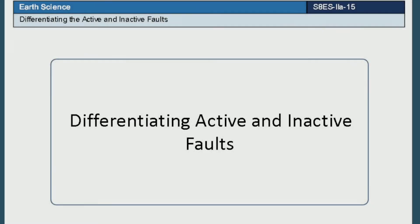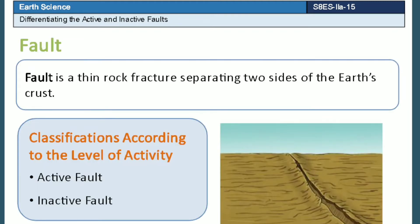Our topic is about differentiating active and inactive faults. A fault is a thin rock fracture separating two sides of the Earth's crust. It can be classified according to the level of its activity. The two classifications are active fault and inactive fault.